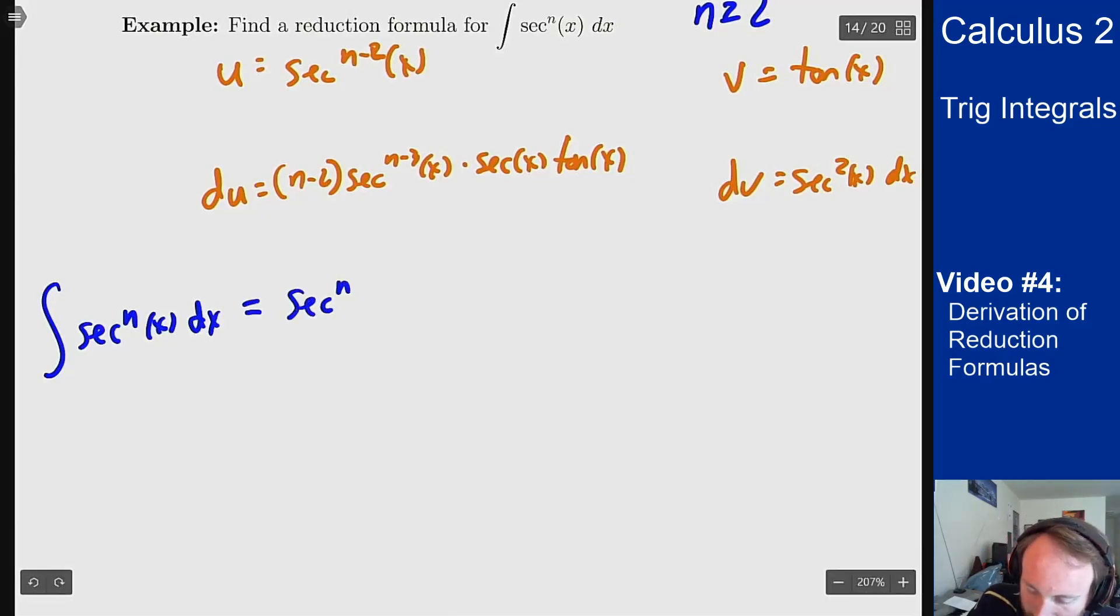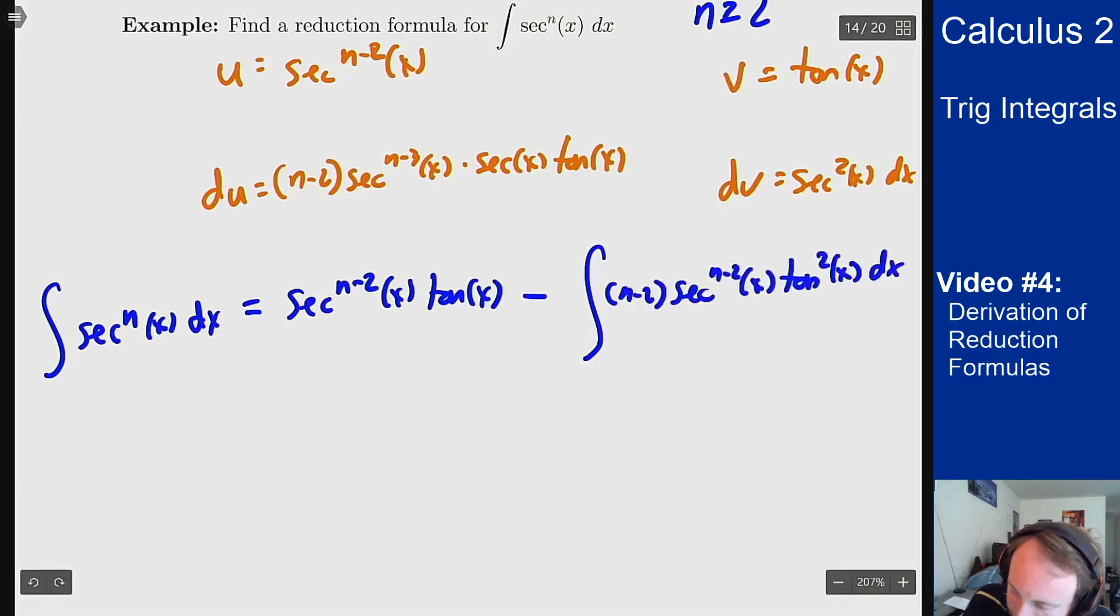So secant to the n minus 2 of x tangent of x minus integral of vdu, which will combine to give me the following, where I've combined this tangent with this tangent to make the tangent squared in that formula.